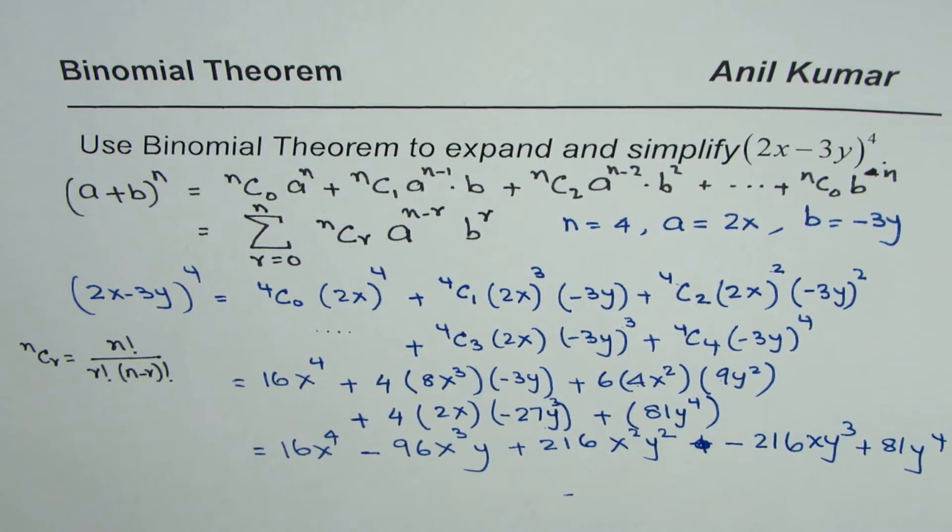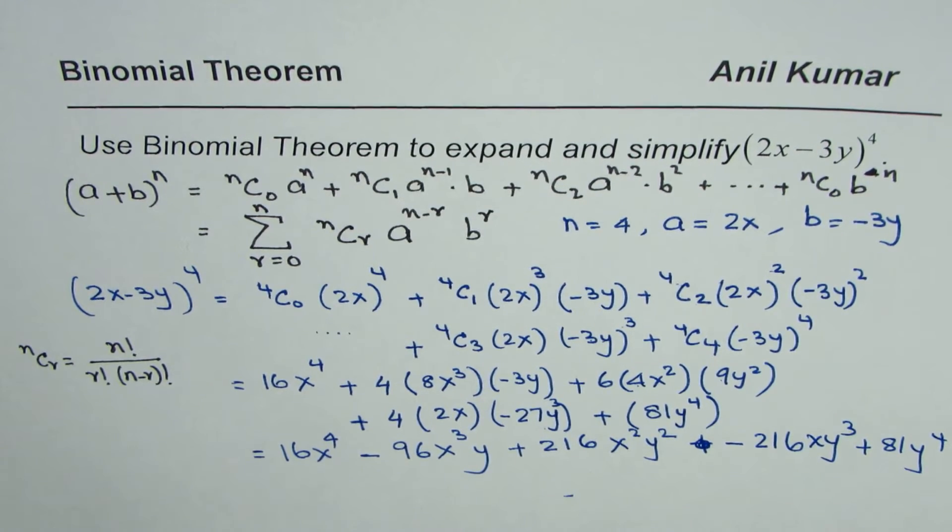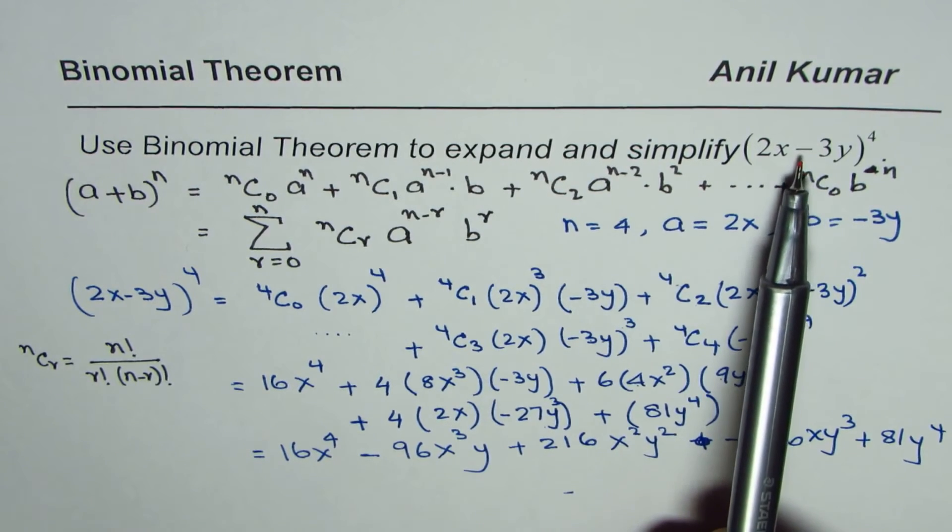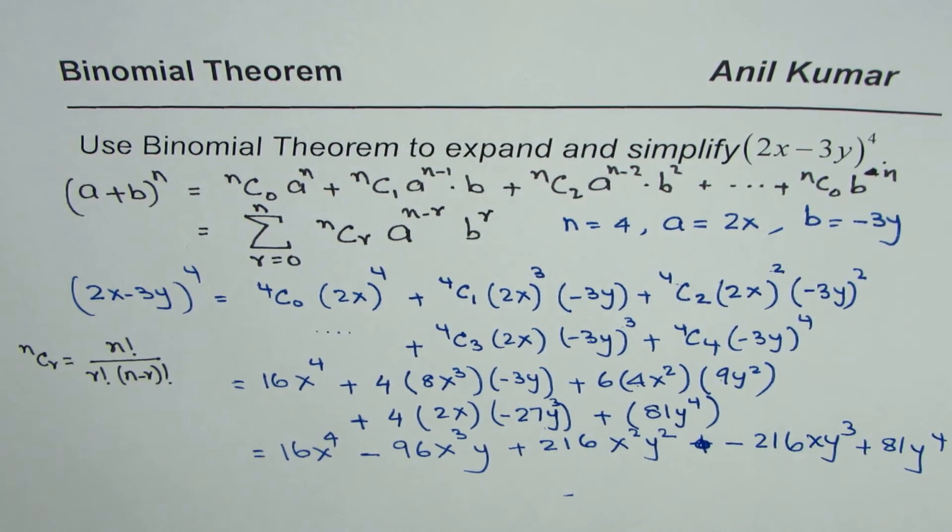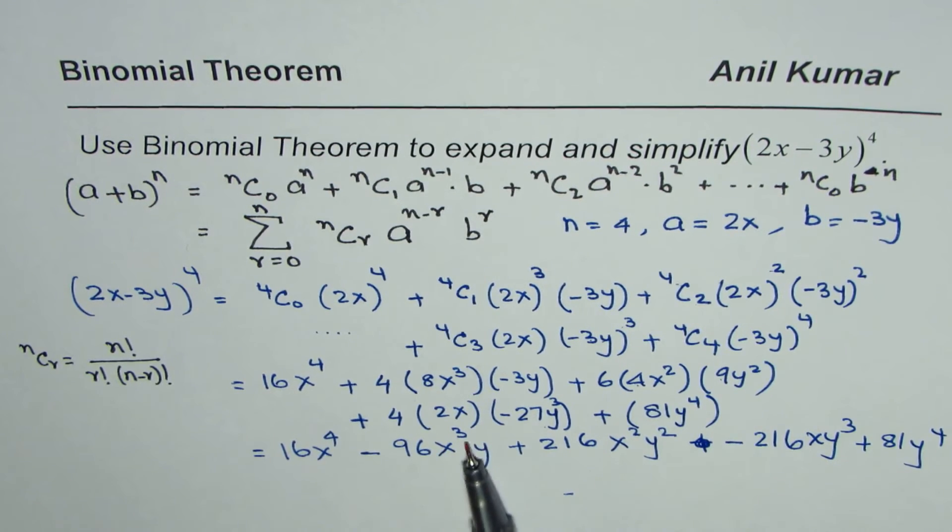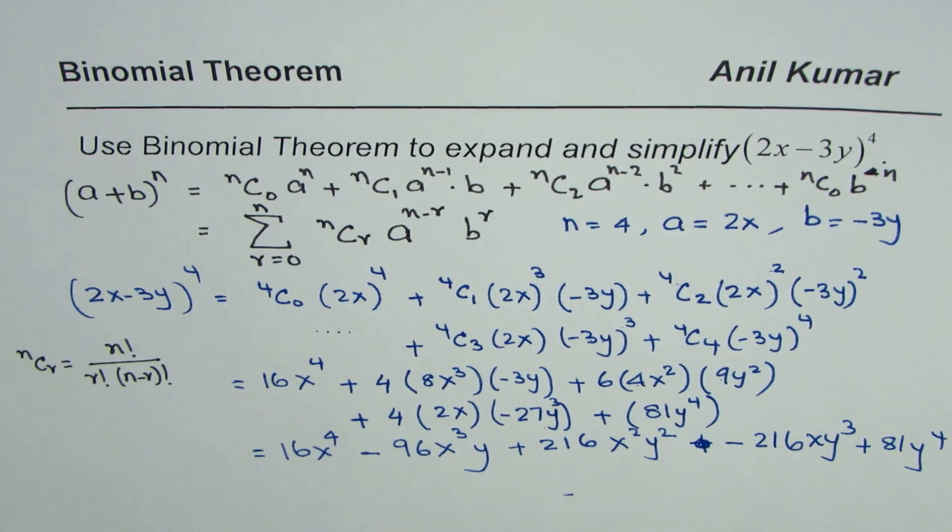So that is how you could expand 2x minus 3y to the power of 4 with the help of binomial theorem. I hope that helps. Remember, when you expand, you are going to get 5 terms. Since this is negative, alternate terms will be negative. And also check the powers. Powers for x and y, when you add, this sum will always be 4. Power of x, exponent of x, decreases while exponent of y increases as we move from left to right. I am Anil Kumar, and I hope that helps. You can see some more videos and check how to expand fractions and negative binomials using this particular method. Thank you and all the best.